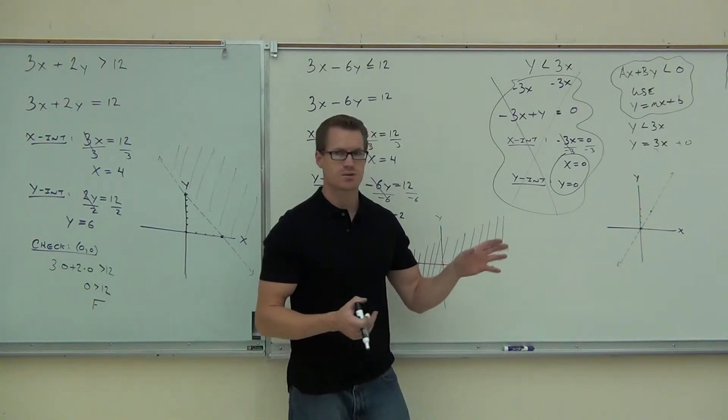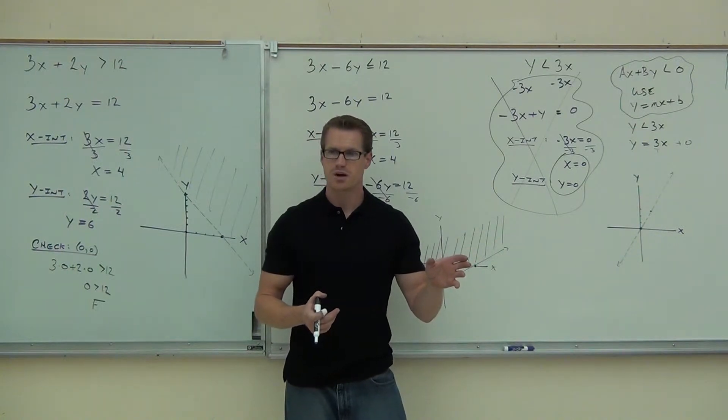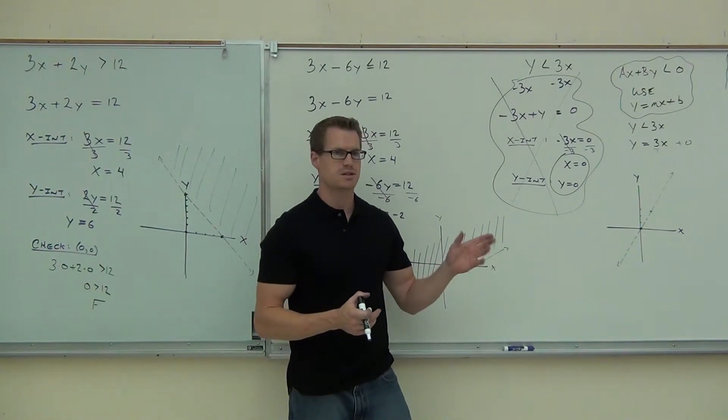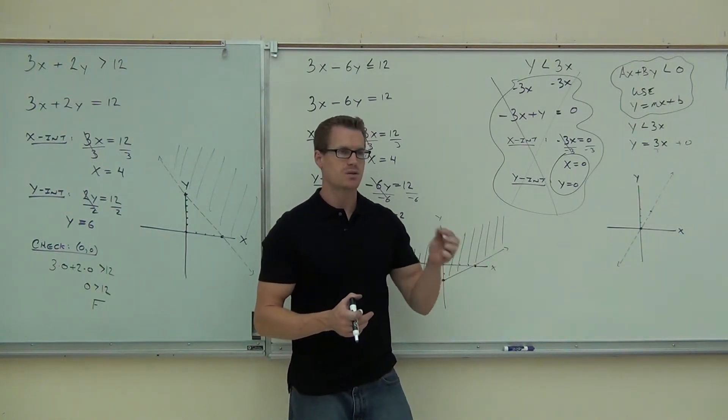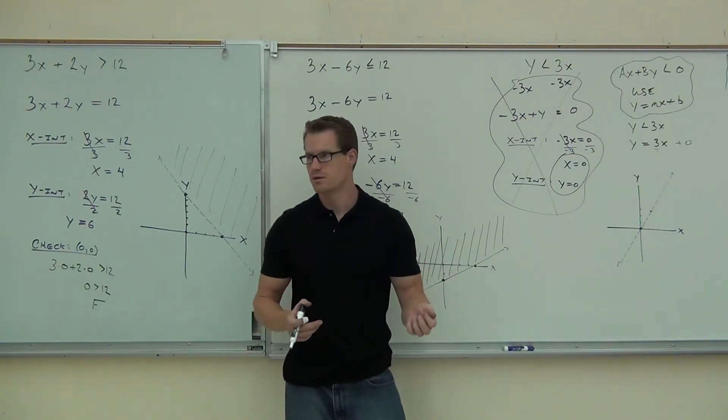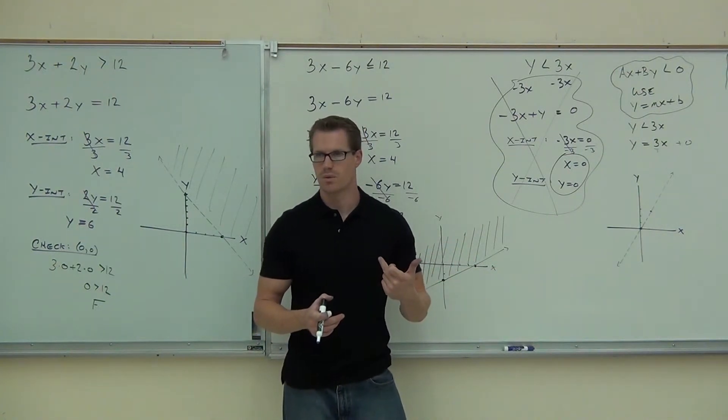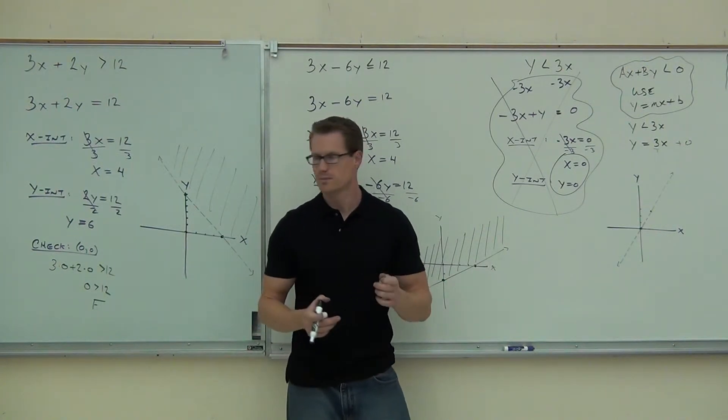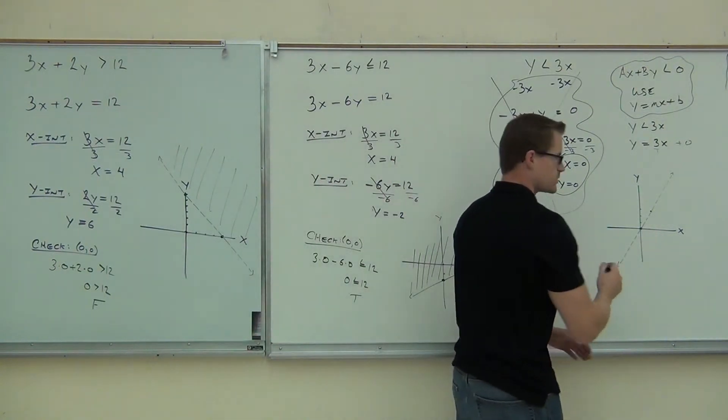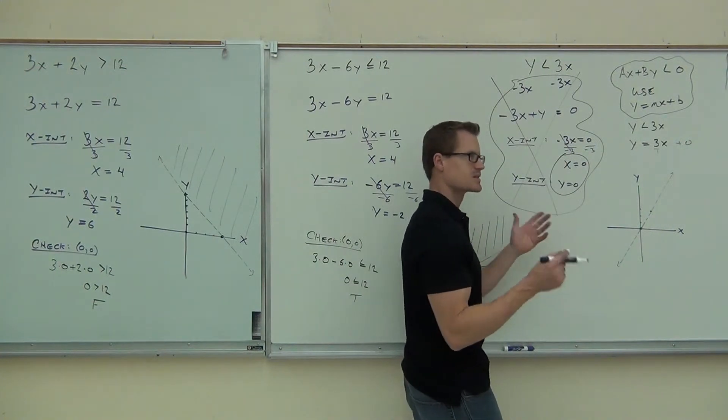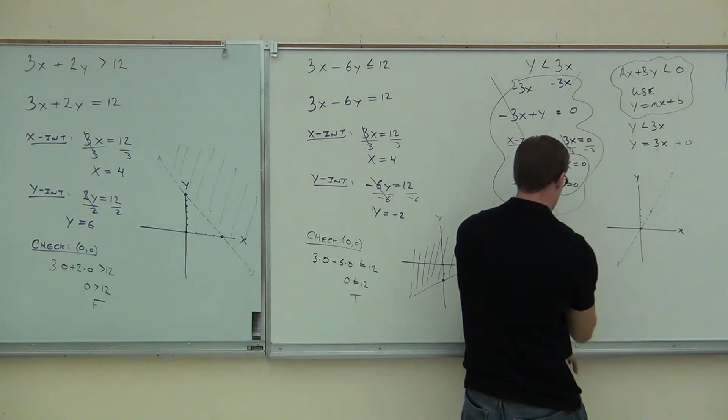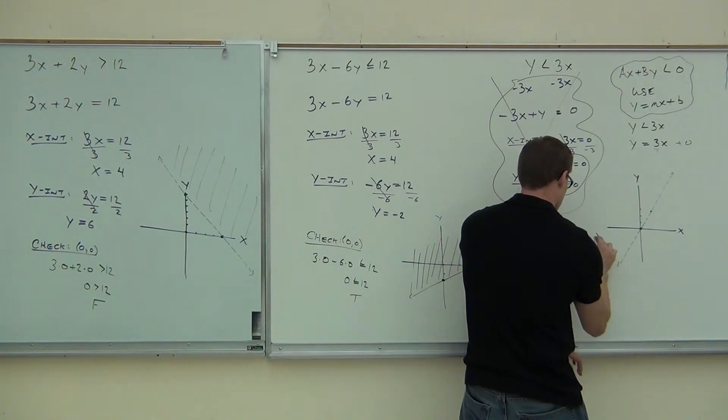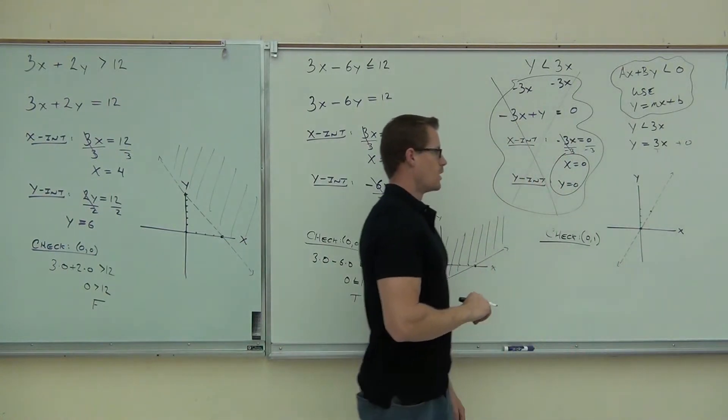So if you can't check zero, zero, you can check almost any other point that you want, as long as it's not on the line. If you can't use zero, zero, I'm going to pick like zero, one. That's the one I always go with, is zero, one. If zero, zero doesn't work, zero, one will work. Unless you have a vertical line at the y-axis, but that's generally not going to happen.